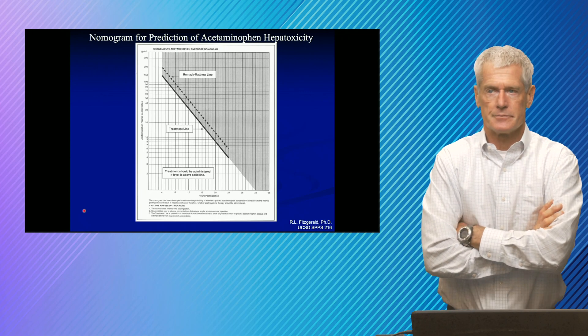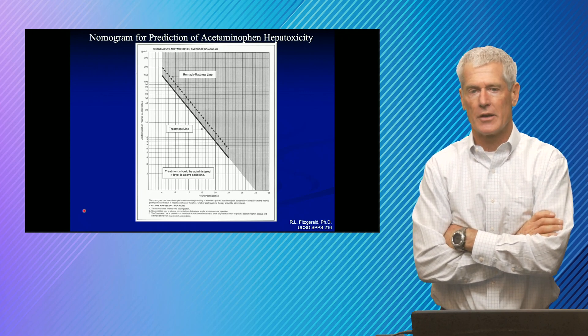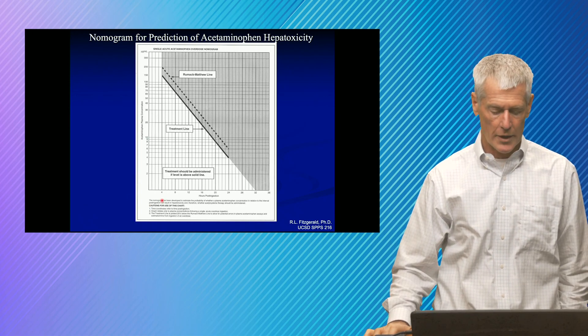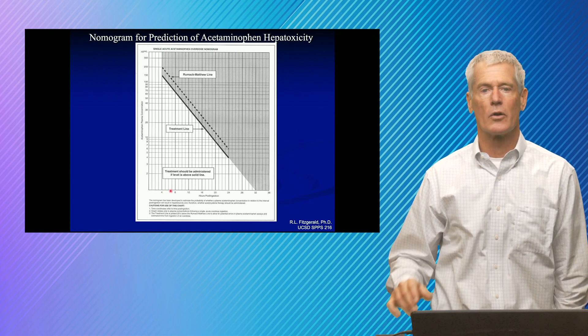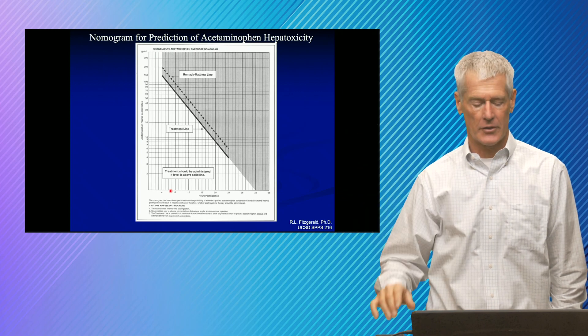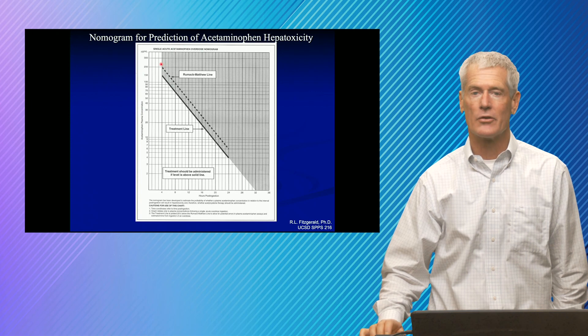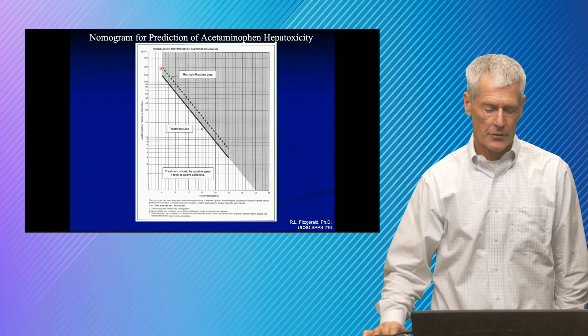This is the Rumac diagram, and it's used to help assess the potential for toxicity. And you'll notice a couple of things about this. One is that on the x-axis, it doesn't start until four hours. And so again, we're trying to wait to see have they reached the post-absorptive state. And so we start to think about assessing them some hours after they've ingested.